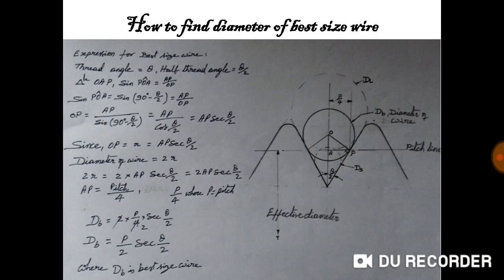The wire which contacts or touches the screw thread at the pitch diameter is known as the best size wire, which gives a proper reading. The position of the wires is shown in the diagram.